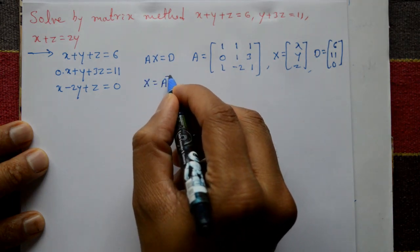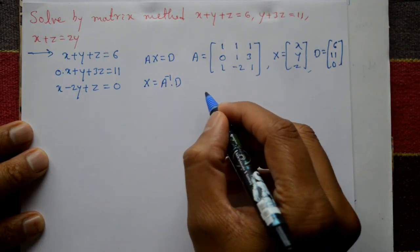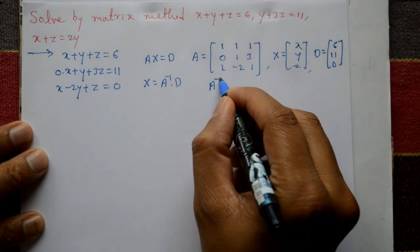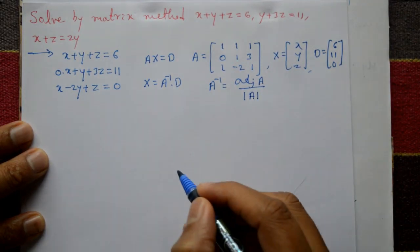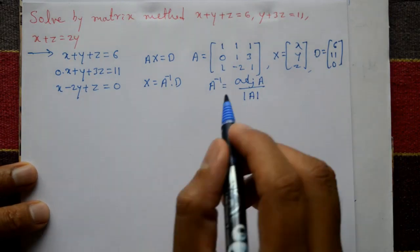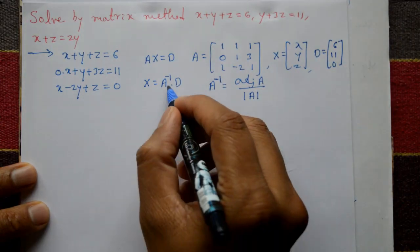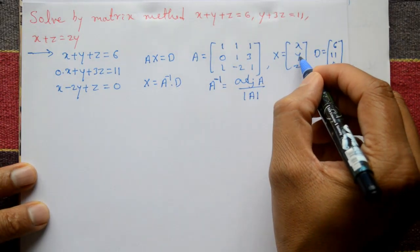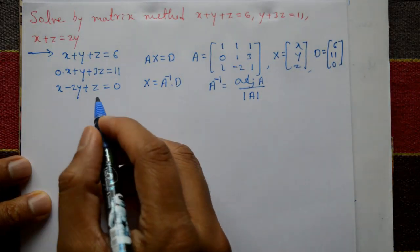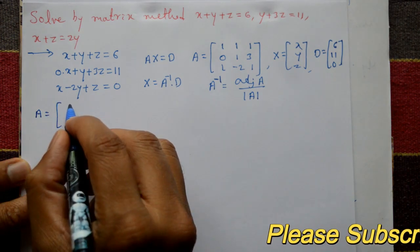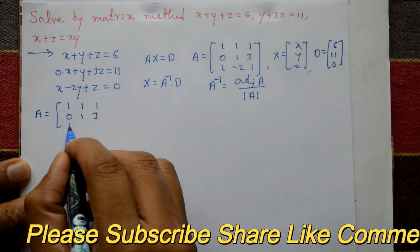By matrix method, x is equal to inverse of A into D. So we need to find the inverse of A, then multiply by D. Inverse of A is equal to adjoint of A divided by determinant of A. After multiplying by D, we get the values of x, y, z.